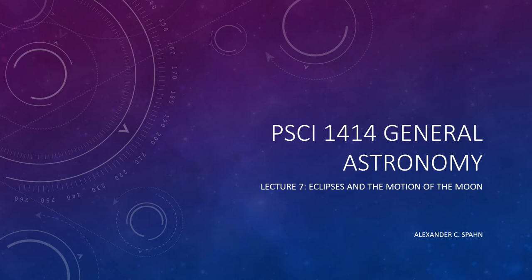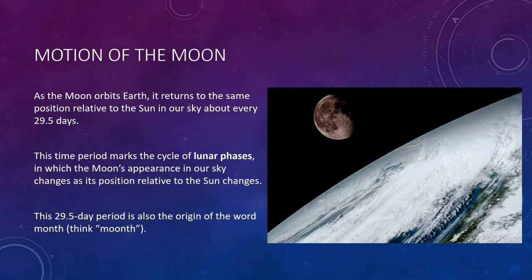Hello, and welcome to General Astronomy Lecture 7: Eclipses and the Motion of the Moon. As the Moon orbits Earth, it returns to the same position relative to the Sun in our sky roughly every 29 and a half days. This time period marks the cycle of lunar phases, in which the Moon's appearance in our sky changes as its relative position to the Sun changes. This 29 and a half day period is also the origin of the word month.